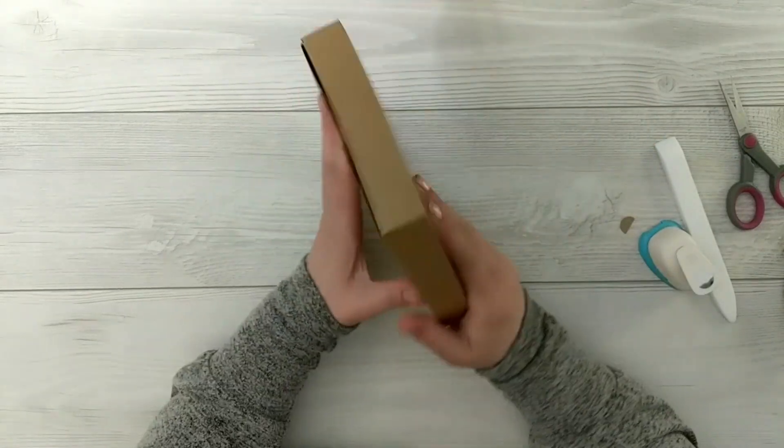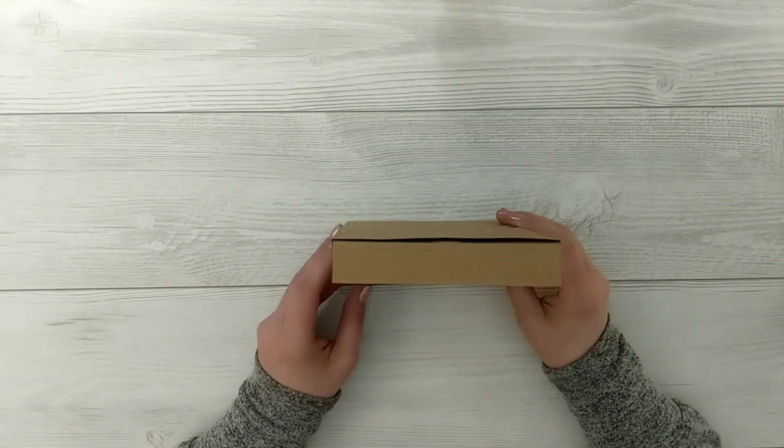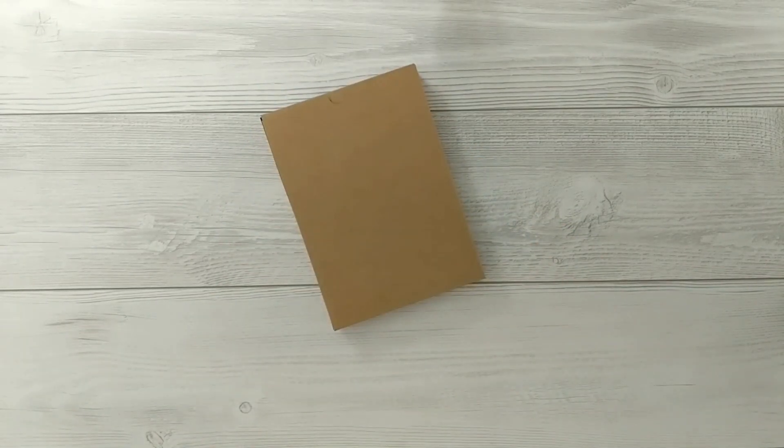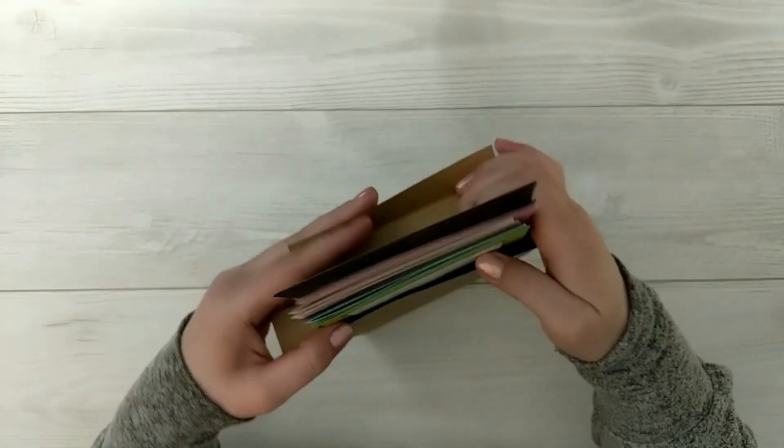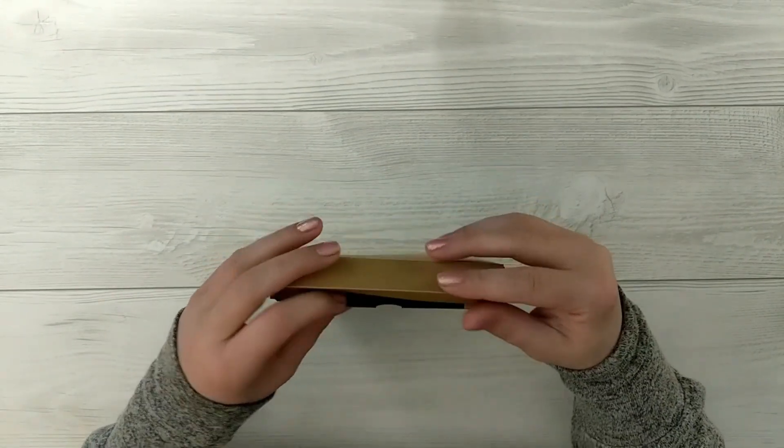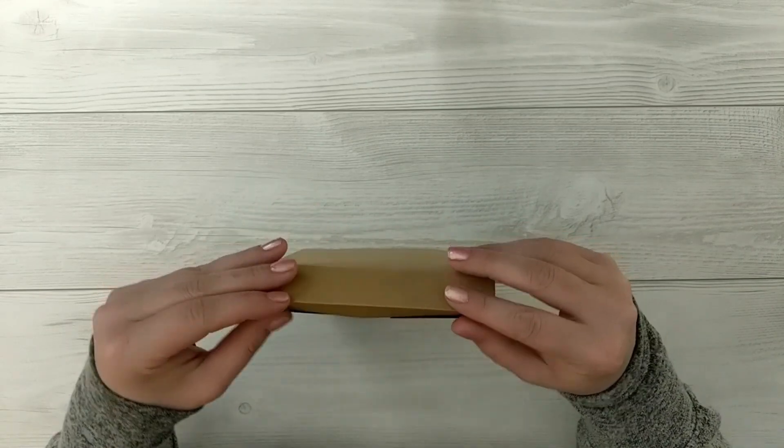I've also gone ahead and used a half inch circle punch and just punched halfway through on my circle to create a little finger hole where you can grab to open the box. And it just kind of creates a professional finished look and then you can slip your cards inside.